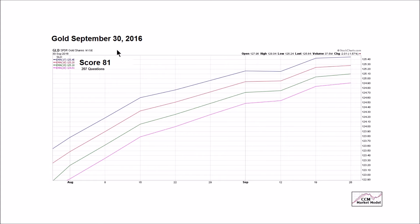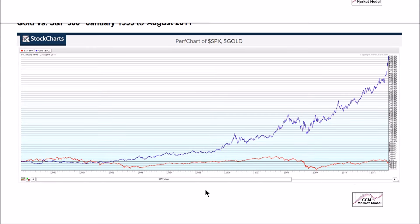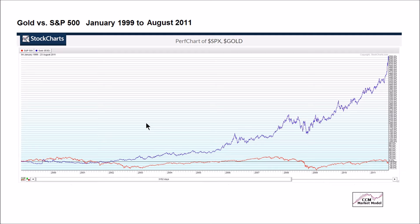These two charts — from the 30th to the 7th — provide visuals to accompany a post from October 6th on Short Takes. An extremely important tenant of the CCM market model, or any multiple asset class trend-following system, is you have to look at multiple asset classes and remove all bias. If a buy signal comes for gold it doesn't matter whether you like gold — if the math says own gold, you own gold. If the math says reduce your exposure, you execute.